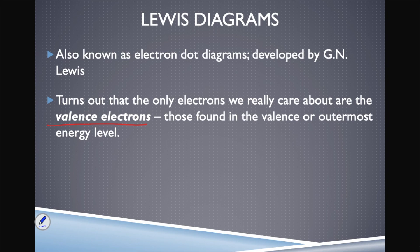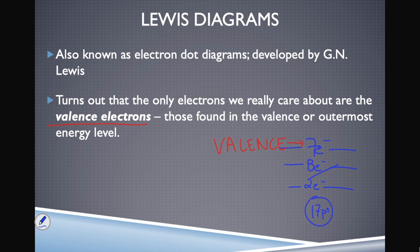Lewis recognized that inner electrons don't really do much. For chlorine, for example, we had 17 protons, two electrons in the first energy level, eight in the second, and seven in the outermost energy level — that's the valence energy level with our seven valence electrons. Lewis wanted to focus only on those, because valence electrons determine how bonding happens and how chlorine bonds with other elements.